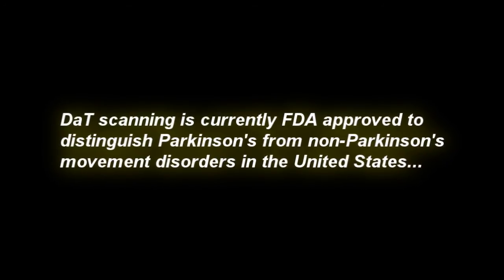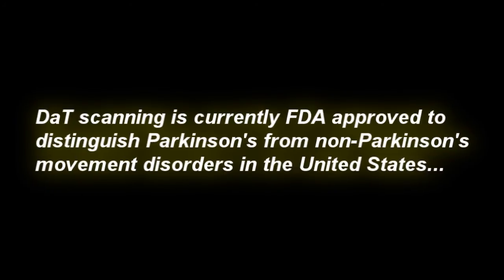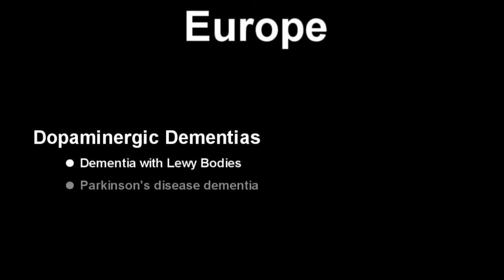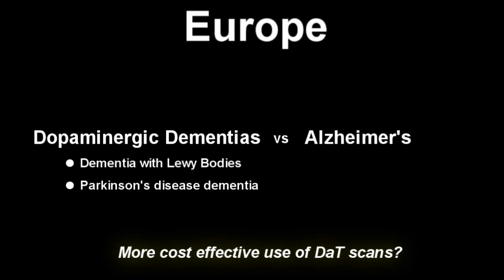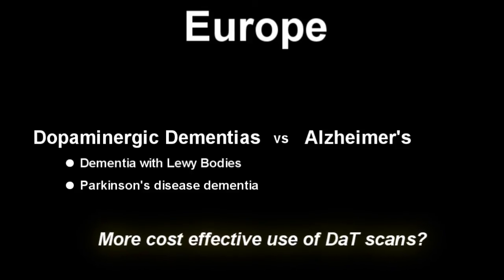Currently, in the United States, DAT scanning is approved for the differentiation of Parkinson's and non-Parkinson's tremors or movement disorders. In Europe, the same technology is also used to differentiate dopaminergic-related dementias — such as dementia with Lewy body and Parkinson's disease dementia — from Alzheimer's. In my opinion, this may actually be a more useful and cost-effective application of this technology, due to the consequences and clinical ramifications of a misdiagnosis.